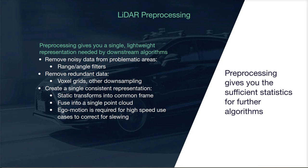So what did we just learn? Preprocessing is an important and necessary part of any LiDAR processing pipeline. It provides a clean, simple representation for downstream algorithms. This is accomplished by a number of different algorithms: you can remove noisy data or data from problematic areas via range or angle-based filters; you can simplify redundant data by using voxel grids or other downsampling techniques; and you can create a single consistent representation by using fusion via transforming and concatenating point clouds together. In the next section, we'll start talking about the understanding portion and begin with ground filtering.